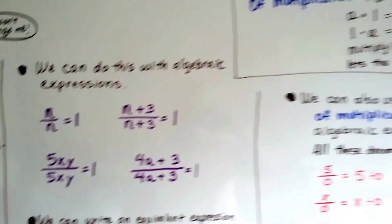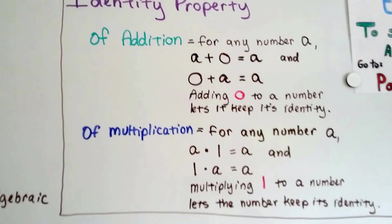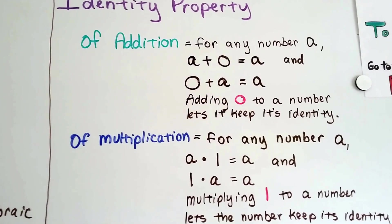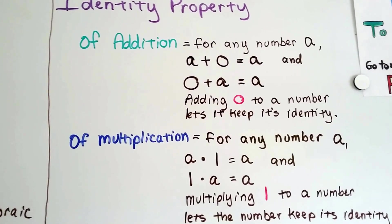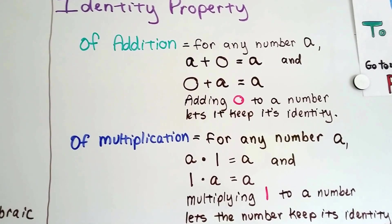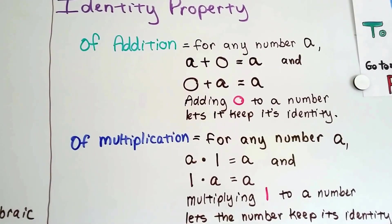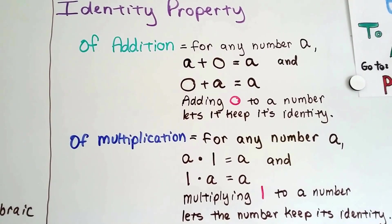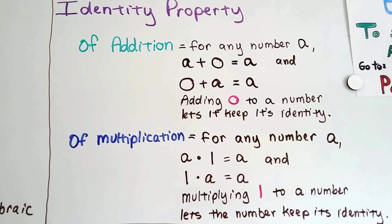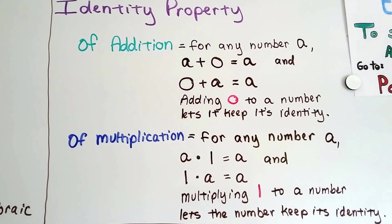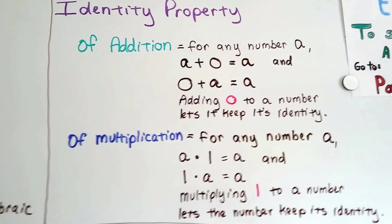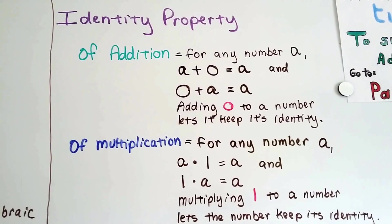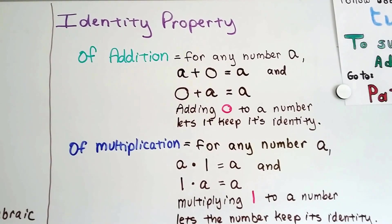So the identity property of addition says: for any number a, if you have a plus 0, it's going to equal a. And if you have 0 plus a, it's going to equal a. Adding 0 to a number lets it keep its identity — it doesn't change. And the identity property of multiplication says: for any number a, a times 1 equals a, and 1 times a equals a.